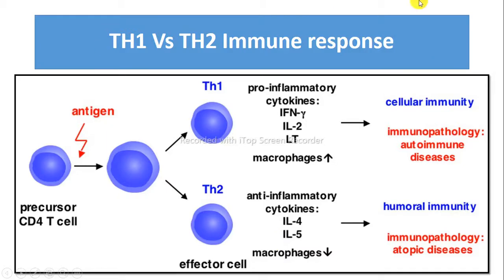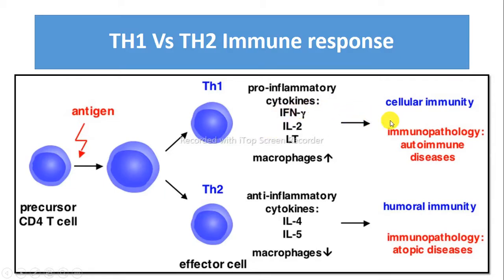Th1 responses act against intracellular parasites such as bacteria and viruses, while Th2 cell responses act against large extracellular parasites such as helminths. Excessive Th1 response is responsible for uncontrolled damage through autoimmune responses, and Th2 responses are responsible for counteracting the Th1 immune responses.